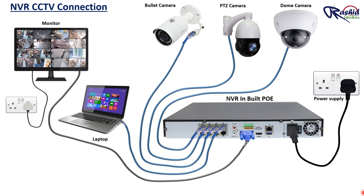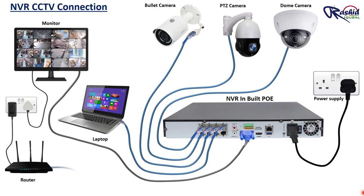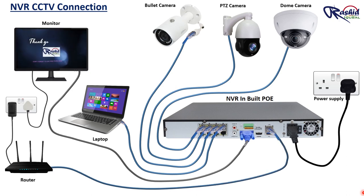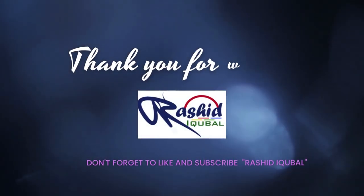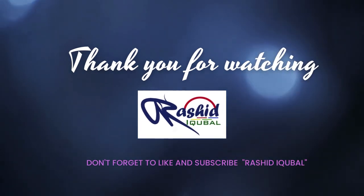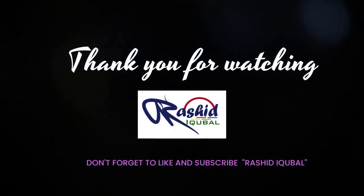If you want to see video footage anywhere in the world, then you need to install a router to get internet. We can connect an Ethernet cable from the router to the NVR in the RJ45 port. And finally, this is the whole installation procedure. Hope you understand. Thank you very much for watching this video. Please do like and subscribe to Rashid Iqbal channel. We will see you in the next video.